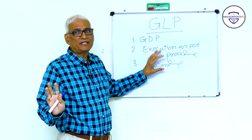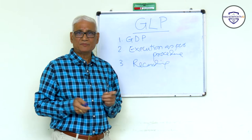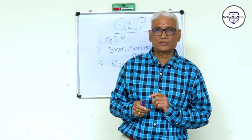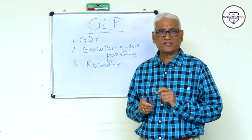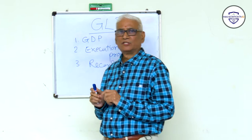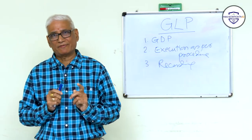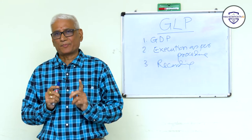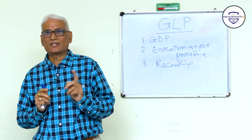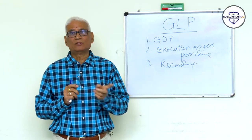There should not be any data integrity issues. The same GDP information can be obtained from ICH Q7 Section 6.6, Section 11, and Section 12. You can also refer to 21 CFR Part 211 Subpart I, Sections 211.160 to 170, and Subpart J, Sections 180 to 198.